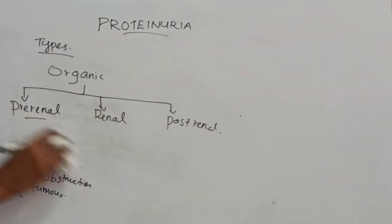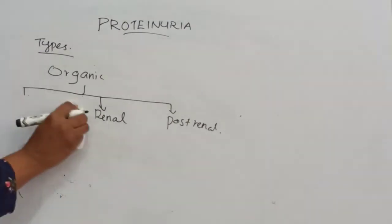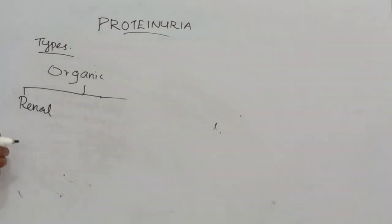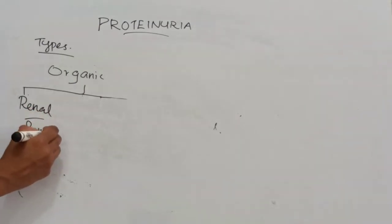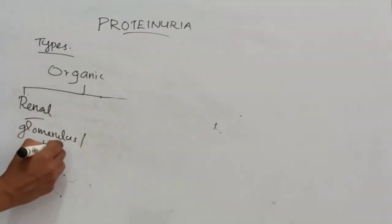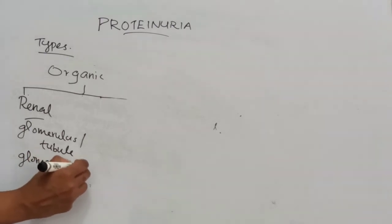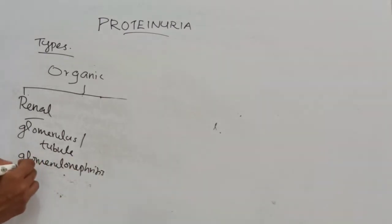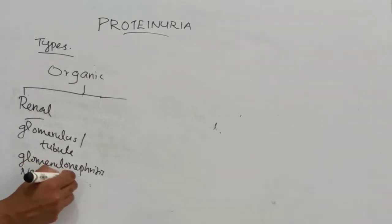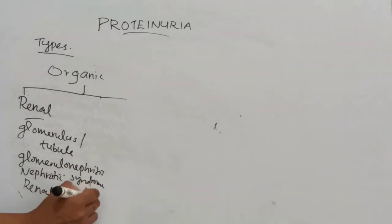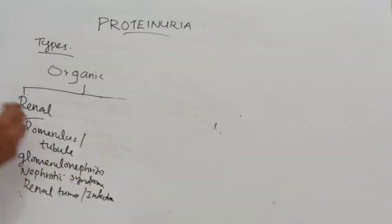Coming to renal proteinuria: this results from damage to the glomerulus or tubule. Examples include glomerulonephritis, nephrotic syndrome, renal tumor, and infection.